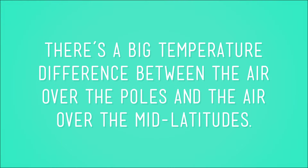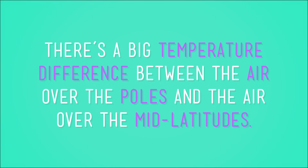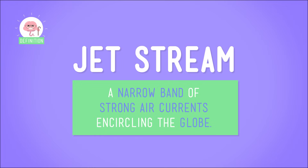Air in these cells is trying extra hard to get from one pressure zone to another, since there's a big temperature difference between the air over the poles and the air over the mid-latitudes. But the Earth is spinning faster at the equator than at the poles. As air rises over the equator and makes its way toward the poles, it keeps moving eastward at the same rate, even though the higher it goes, the slower the Earth is spinning. This creates ribbons of very fast-moving air called jet streams.